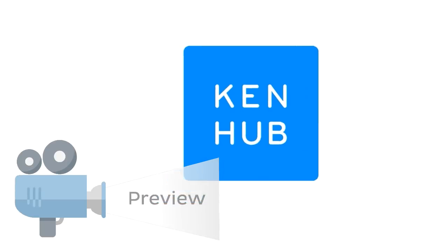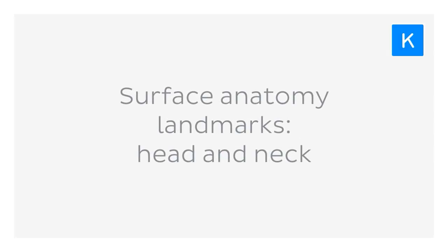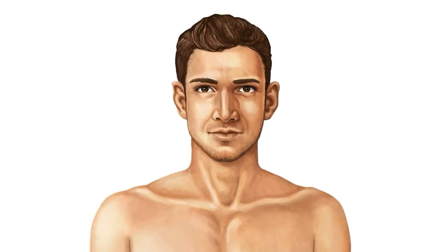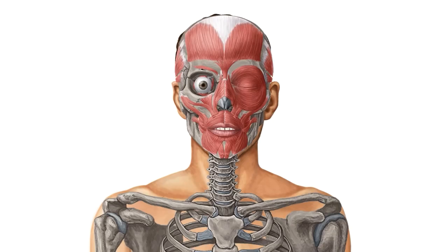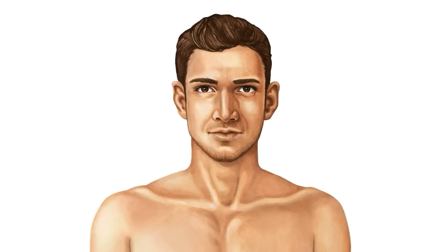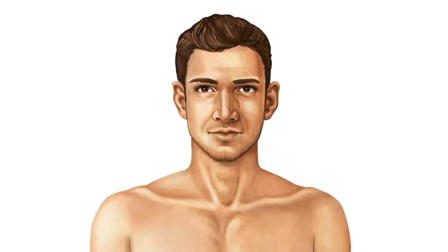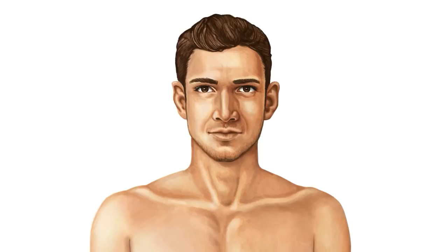Hey everyone, this is Nicole from KenHub and in this tutorial we'll be looking at the surface anatomy landmarks of the head and neck. Thankfully, we don't see people walking around the streets looking like this. For clinicians, this means that we have to rely on the surface landmarks created by underlying structures in order to find our way around the body. Surface anatomy landmarks are anatomical features that can be seen or identified with the naked eye without dissection. Knowledge of these landmarks is essential for carrying out a range of tests and for finding the right spot to operate on during surgical procedures. Not to mention, they're great to be aware of if you're an artist.